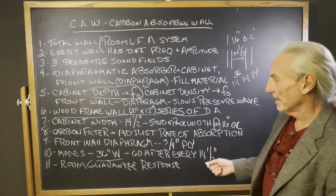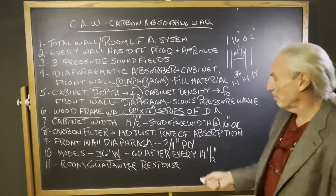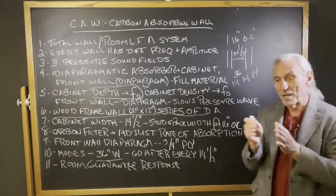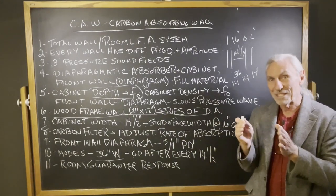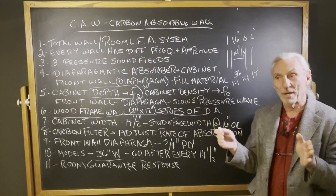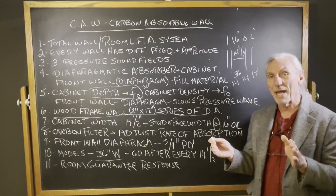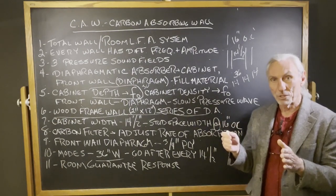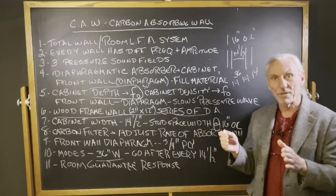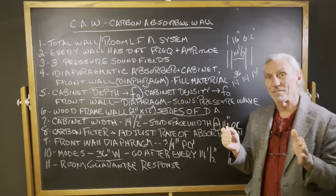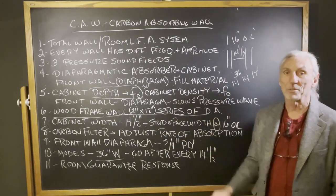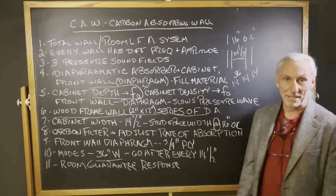The carbon filter: we can adjust the rate of absorption of the filter by increasing the depth of it, adding more carbon. Our standard carbon filter is about 3 1⁄2. 4 produces higher rate. 4 1⁄2, another higher rate. It's that sensitive. Every 1⁄2 inch contributes to increased rate of absorption.